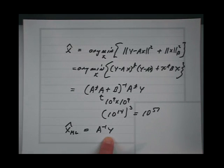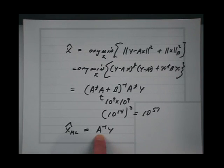So some eigenvalues are a thousand times larger than the others — you're dividing by a small number, which amplifies the noise.